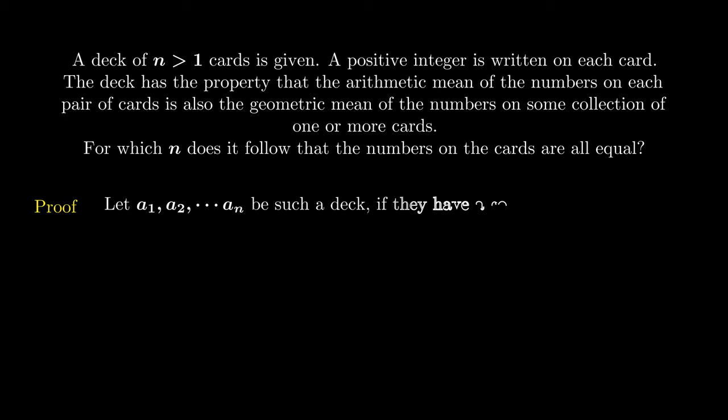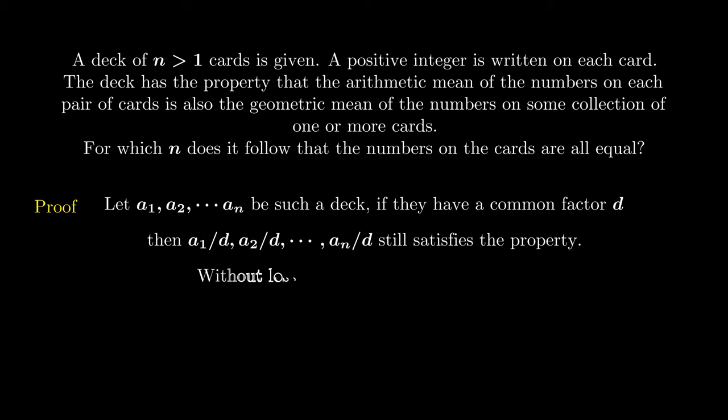We denote the numbers on the deck by a1 to an. It is easy to see that if they have a common factor d, then dividing all the elements by d does not change the property of the deck. So, without loss of generality, we assume that the greatest common divisor of a1 to an is 1.